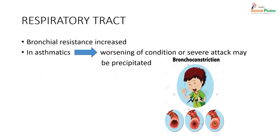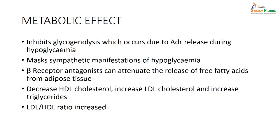Beta blockers are very much contraindicated in respiratory conditions like bronchial asthma. When you use beta blockers, bronchial resistance increases. So they are contraindicated in bronchial asthma because they will worsen the condition, causing severe bronchoconstriction. They should be avoided in respiratory tract infections, bronchial asthma, and other respiratory conditions.